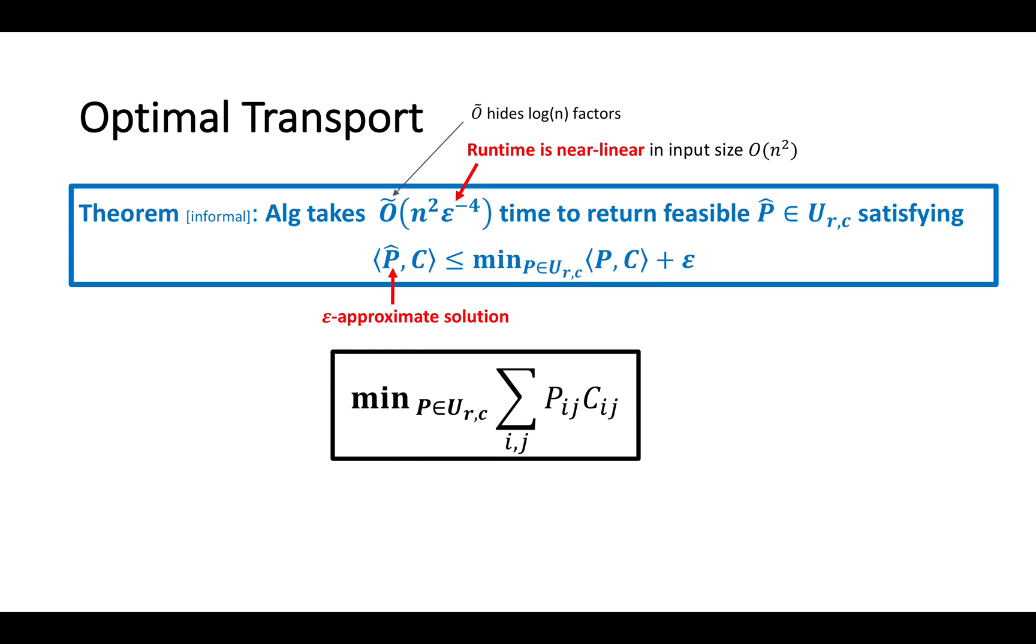Our main result is an algorithm that outputs a feasible matrix P hat, whose objective value is within epsilon of the optimum. The runtime is near linear in the input size, since the input cost matrix has n-squared entries.